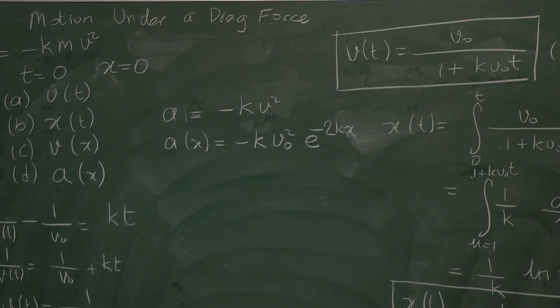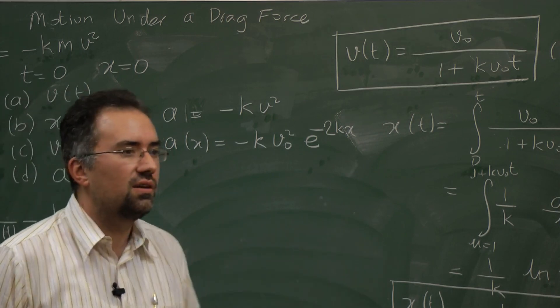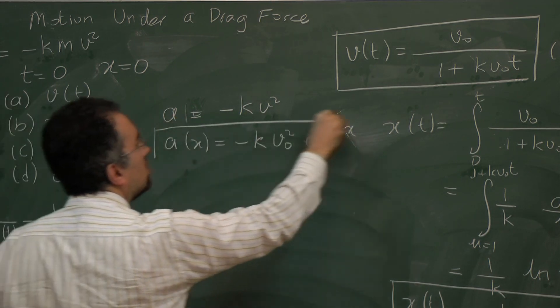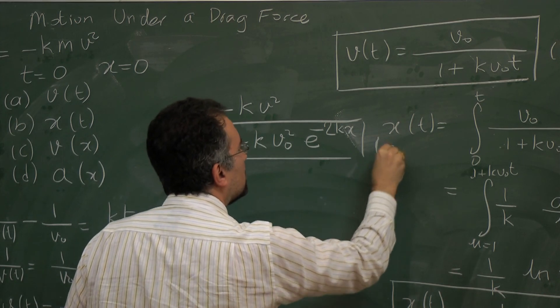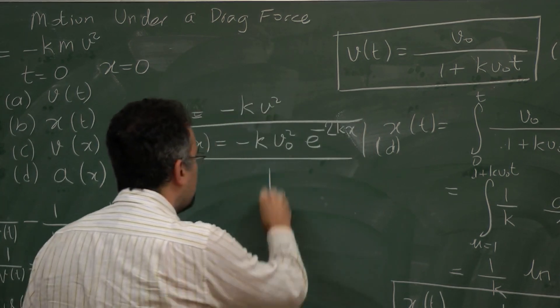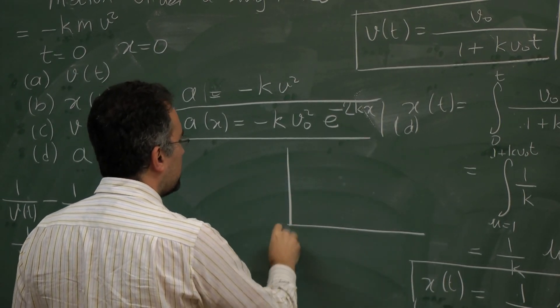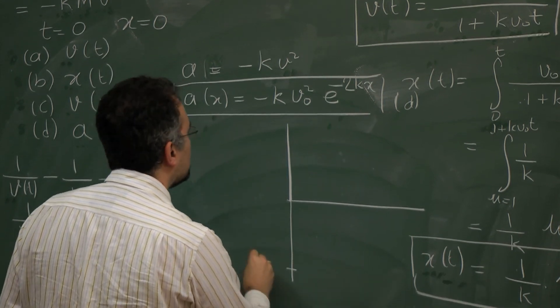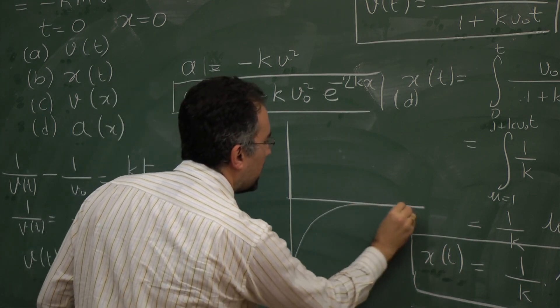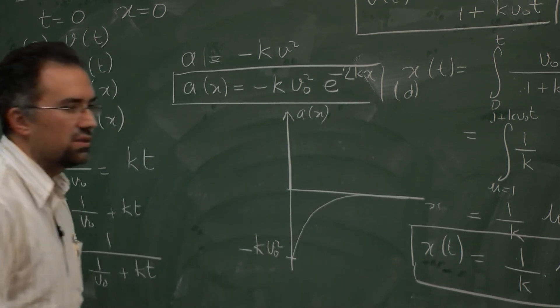So the acceleration of the object with respect to distance, it also decays exponentially just twice as fast as the speed of the object. This is the answer to part d. And if you graph that, it starts at minus k v0 squared, and then it will decay to 0. This is a as a function of x. This is what happens.